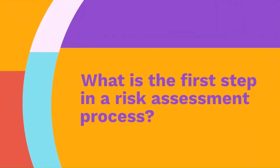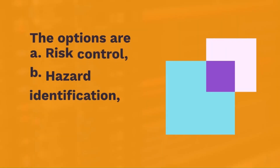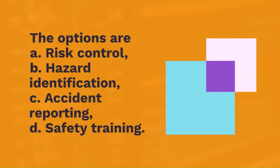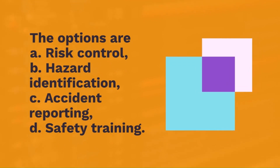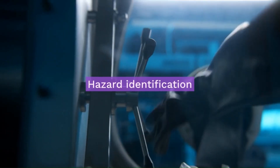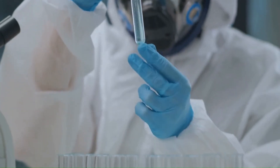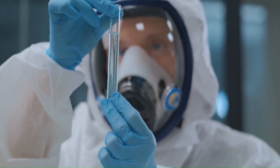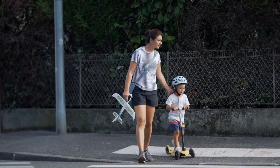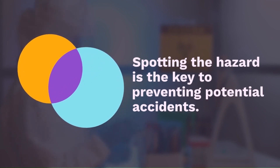Question 9: What is the first step in a risk assessment process? The options are: A — risk control, B — hazard identification, C — accident reporting, or D — safety training. The correct answer is hazard identification. The first thing you do in risk assessment is to spot the danger, just like you would look both ways before crossing the road. Spotting the hazard is the key to preventing potential accidents.